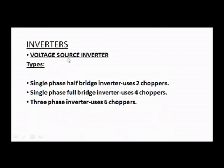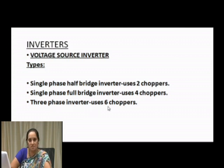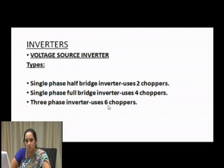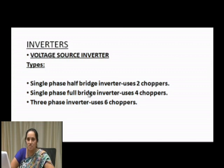Types of voltage source inverters: single-phase half-bridge inverter (uses two thyristors/choppers), single-phase full-bridge inverter (uses four choppers — waveform quality and efficiency improve), and three-phase inverter. For three-phase, the number of thyristors depends on the connection: delta uses 6, while star uses double that. More details on their performance and waveforms will be covered in the next session.